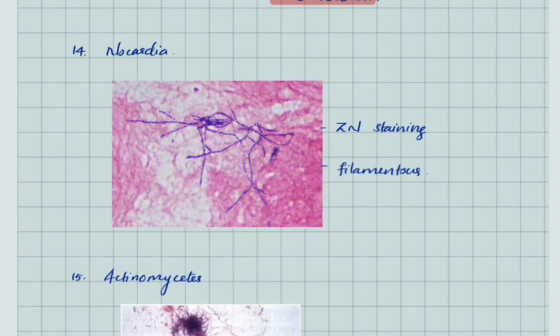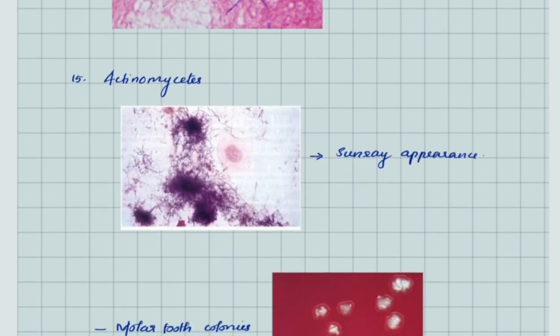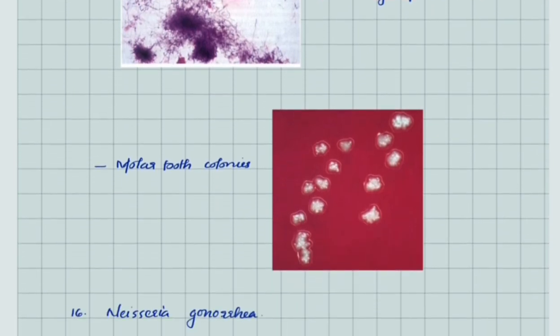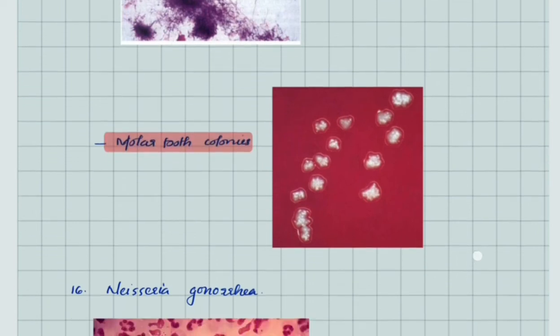Nocardia under Ziehl-Neelsen staining shows filamentous acid-fast bacilli. Actinomyces gives sunray appearance in certain staining and molar tooth colonies in culture medium.